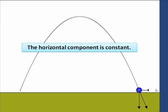The horizontal component is constant. That projectile is moving in the sideways direction at a constant velocity. Look at that little horizontal component, always the same length, always pointing in the same direction during the entire flight.